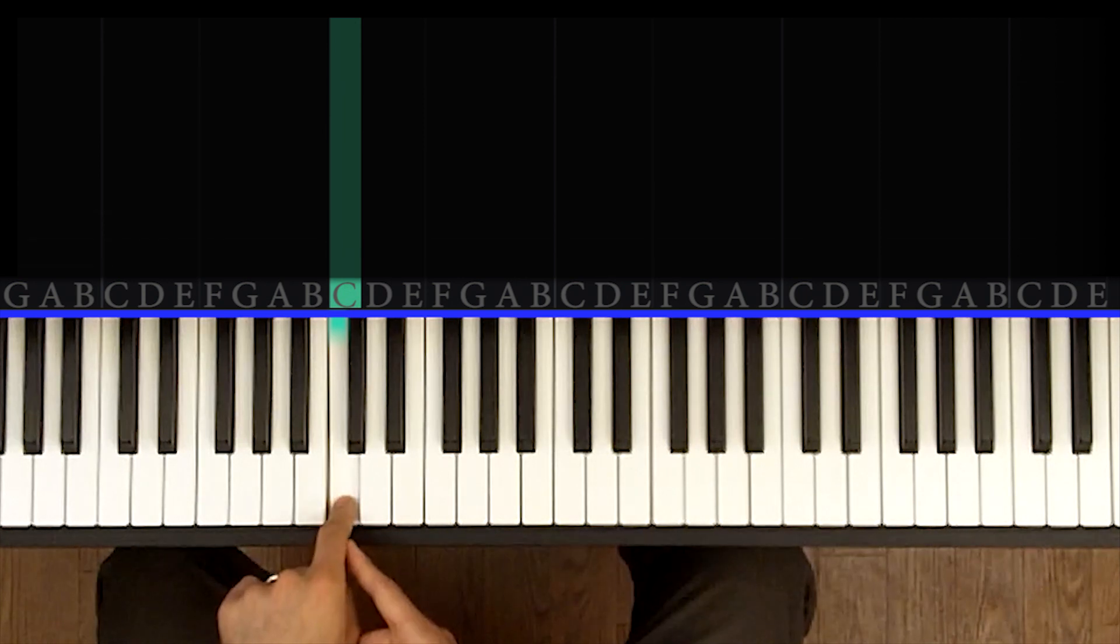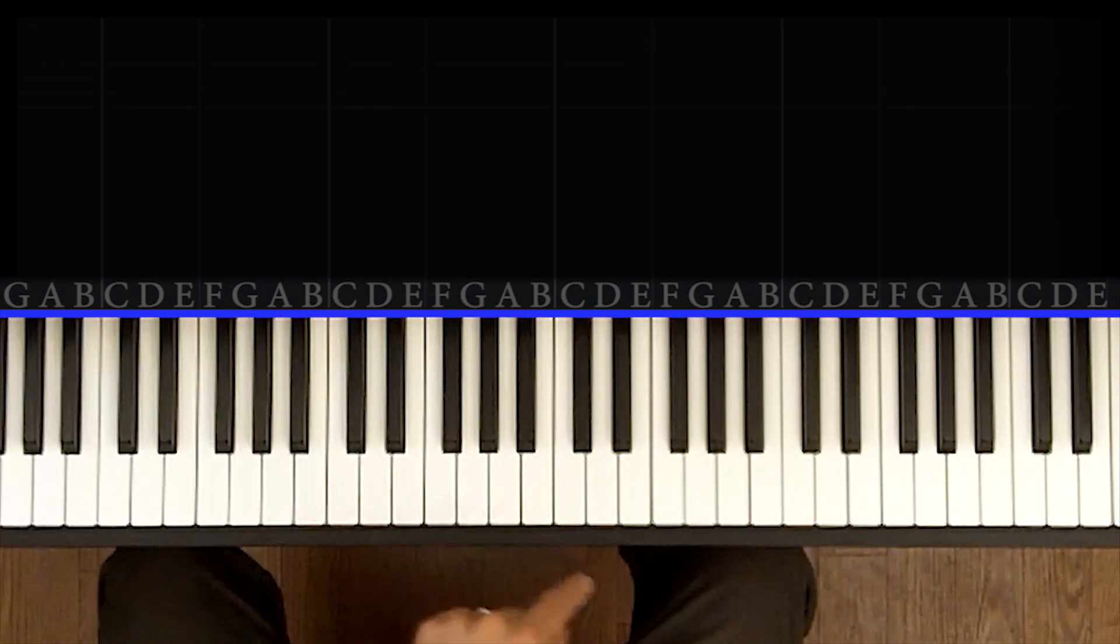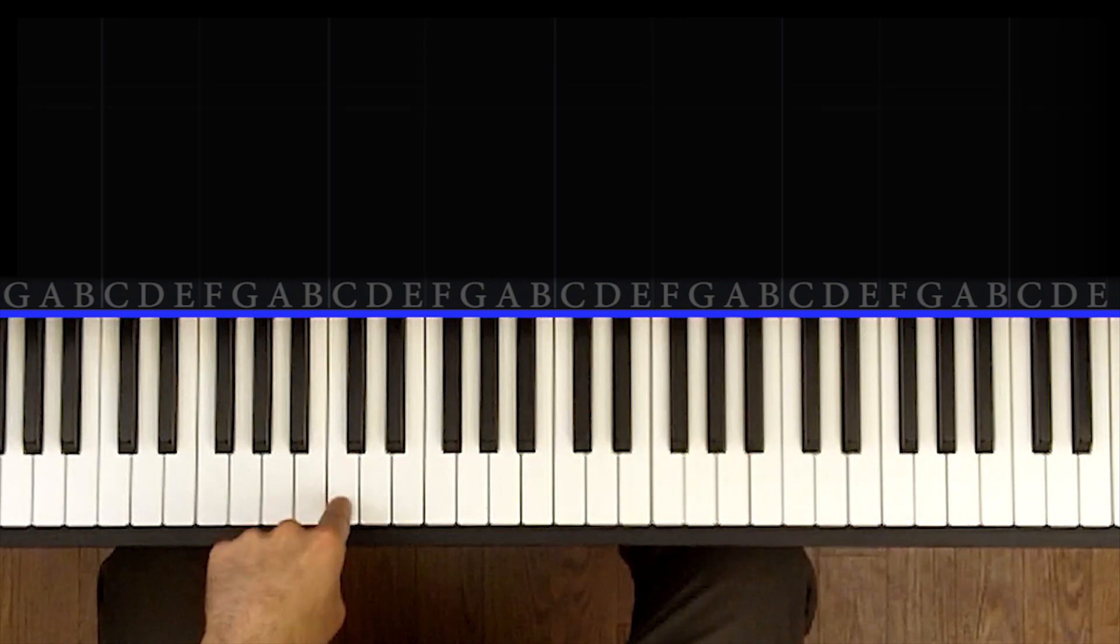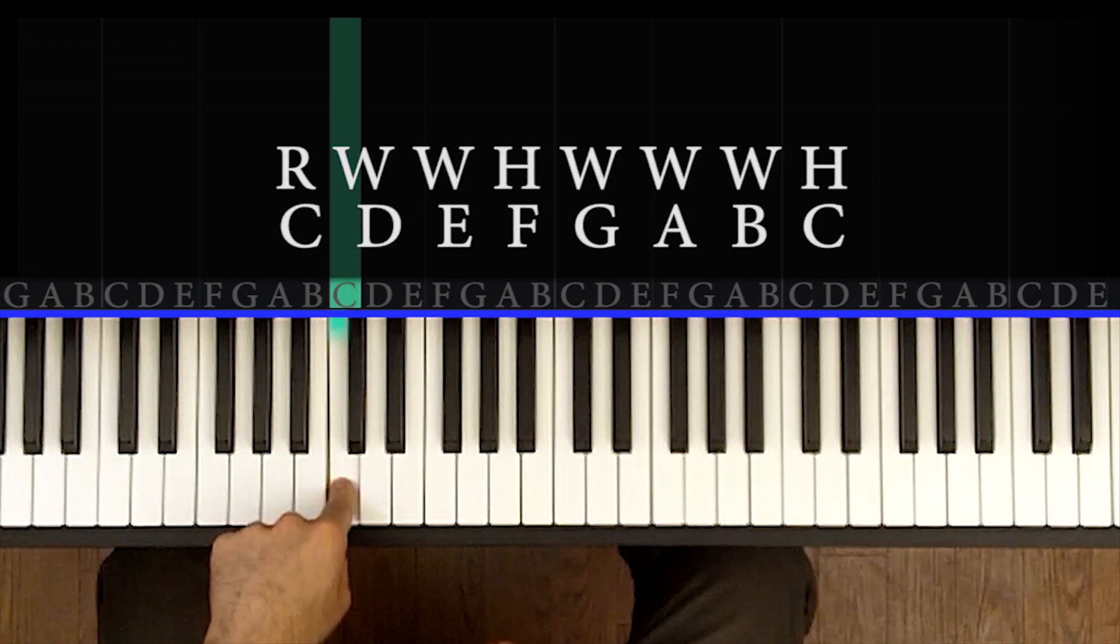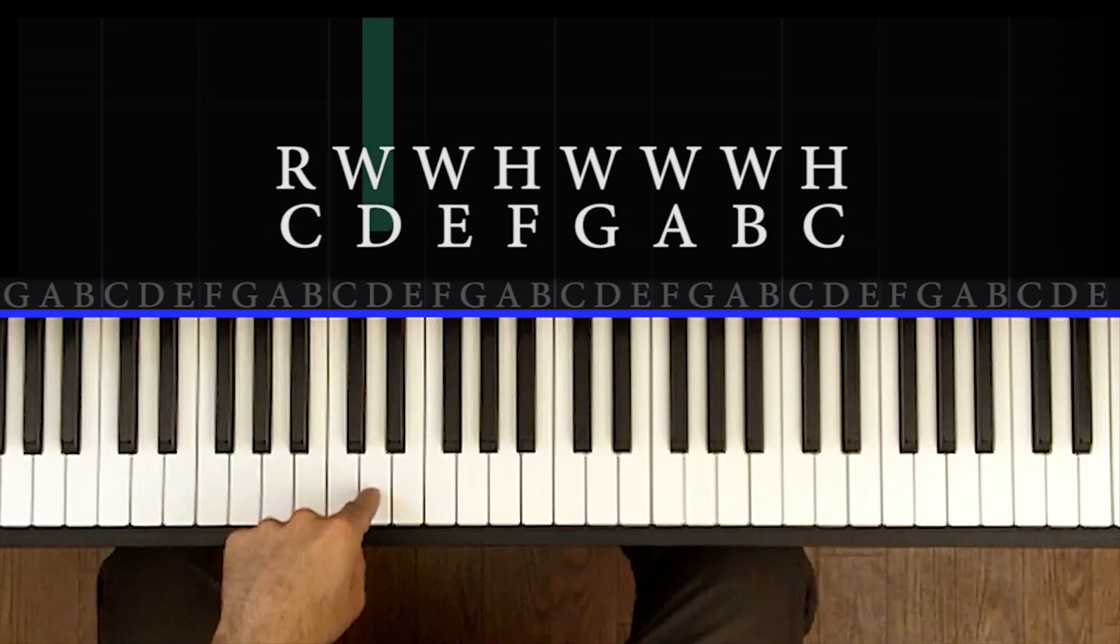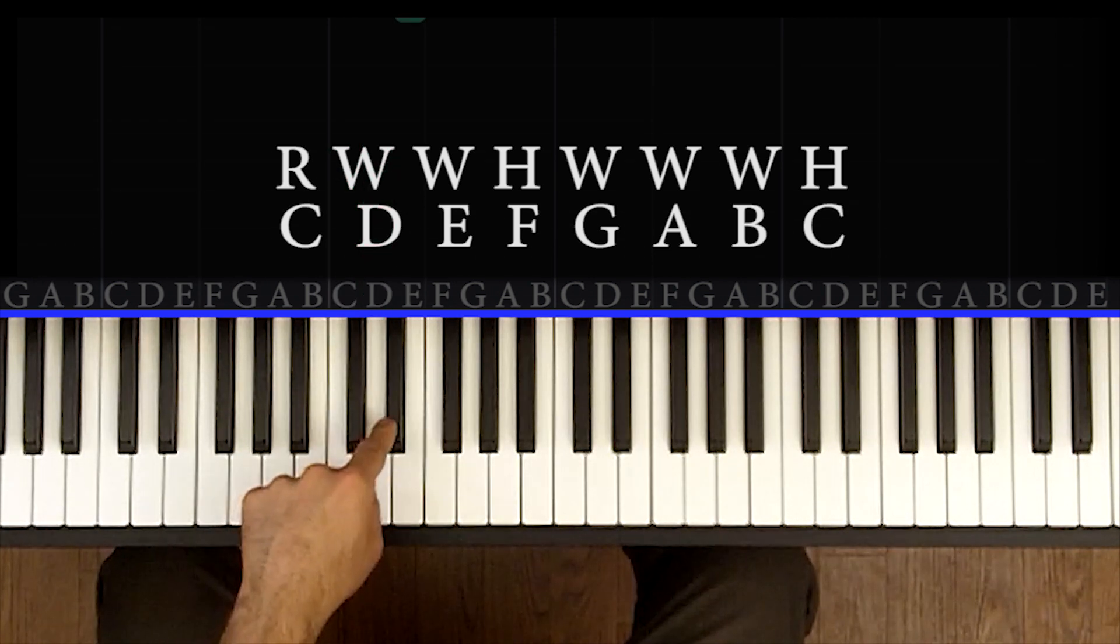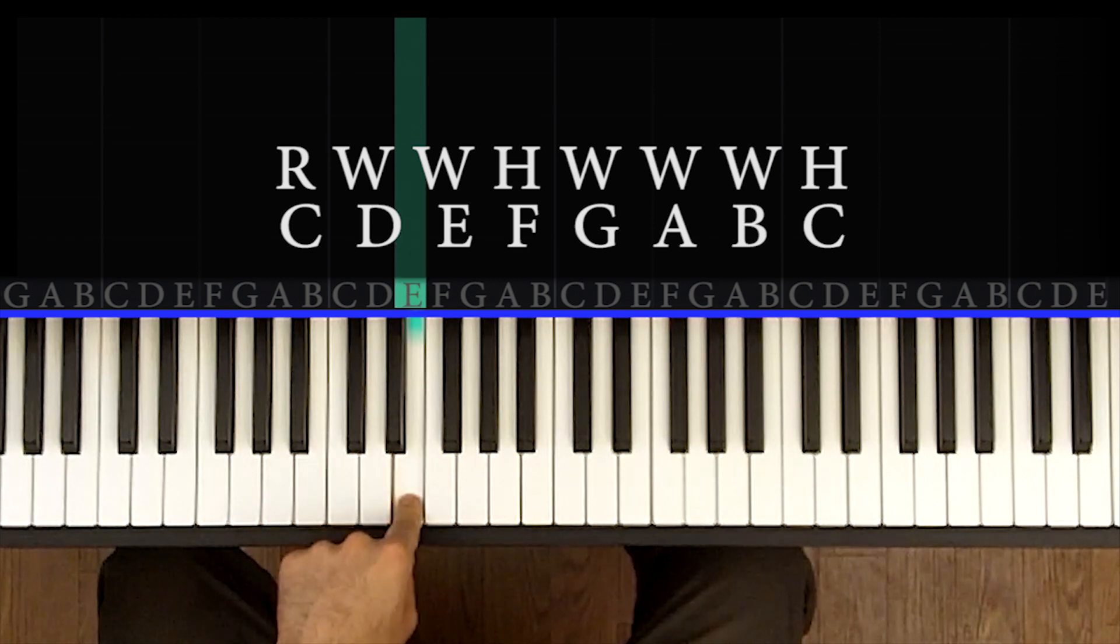So the order of half steps or whole steps that you play to get a major scale is like this. So we're going to start with your root, your root note, which in this case is C, root. You're going to go a whole step. You're going to go another whole step. See, we go two halves and that's on E.